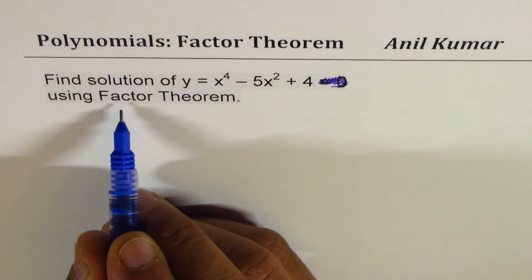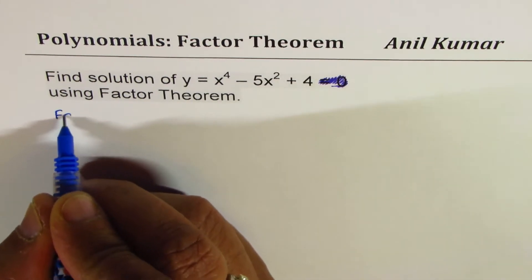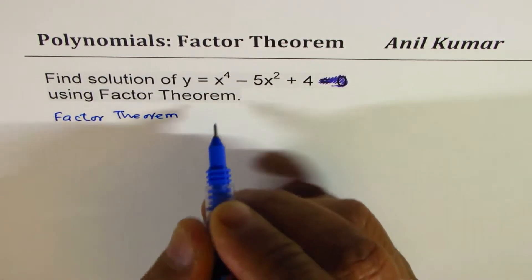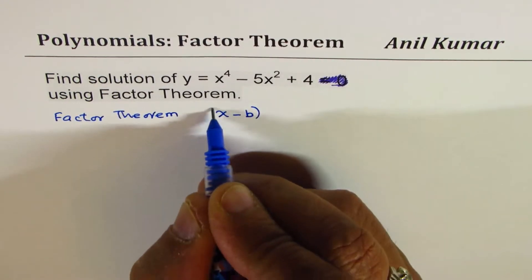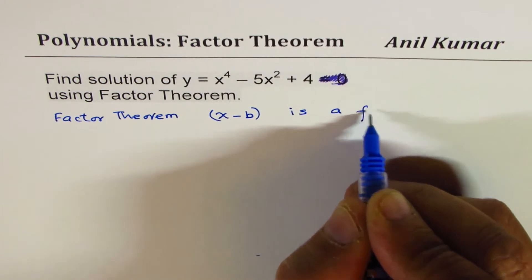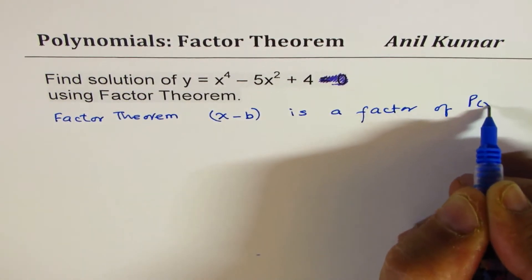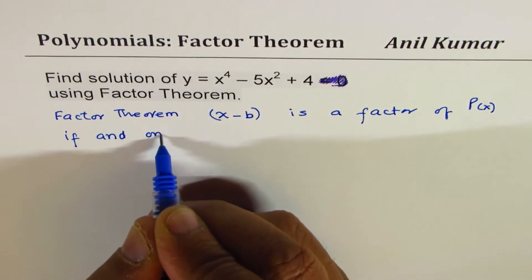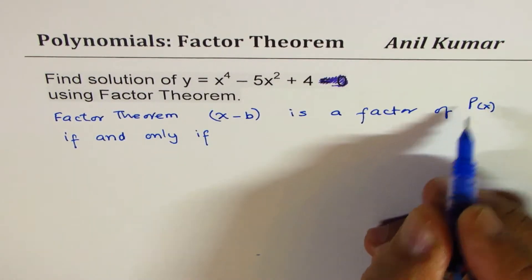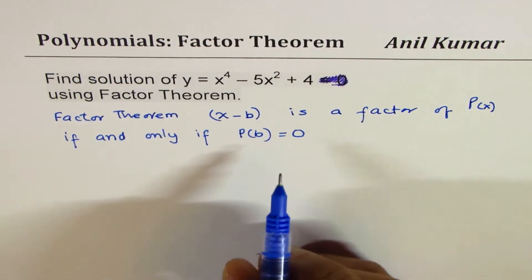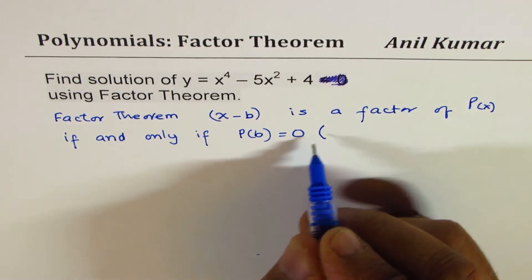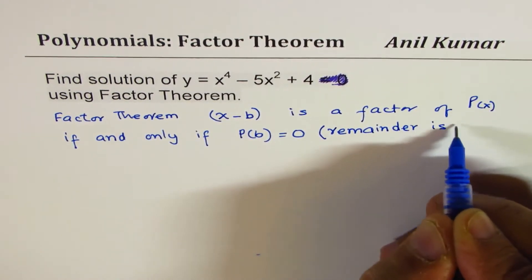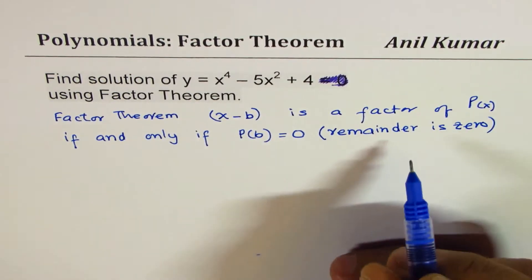Now let's look into the meaning of factor theorem. Basically, factor theorem tells us that x minus b is a factor of a polynomial p(x) if and only if p(b) is equal to 0. So when we say p(b) is 0, we mean the remainder is 0. Factor means the remainder is 0.